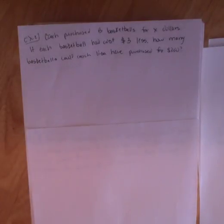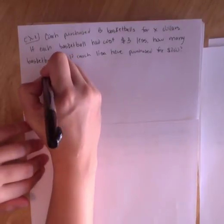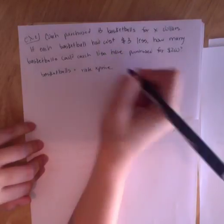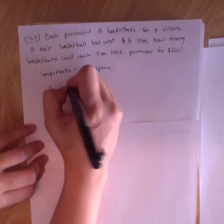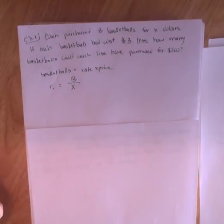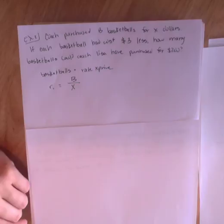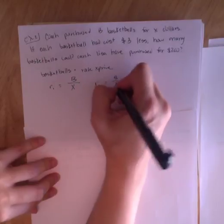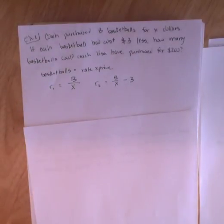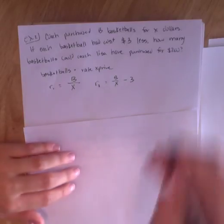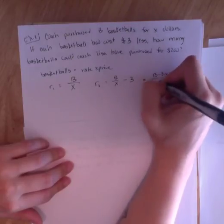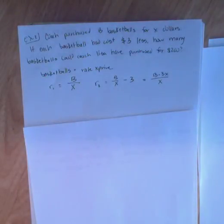All right, let's do another example. Coach purchased B basketballs for X dollars. Again, so we're going to have basketballs equals rate times price. So my rate 1 is B basketballs over X dollars. Now, if each basketball had cost three dollars less, so my rate 2 is going to be B over X minus 3.